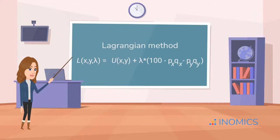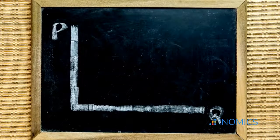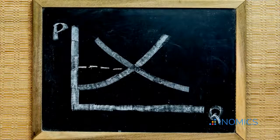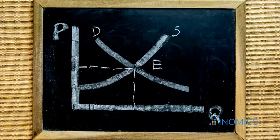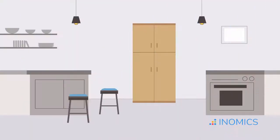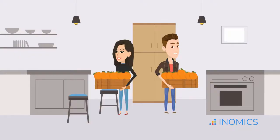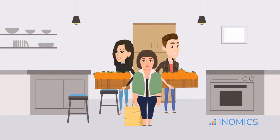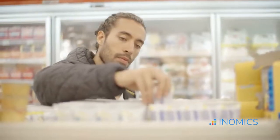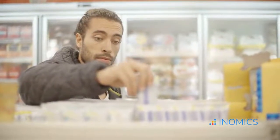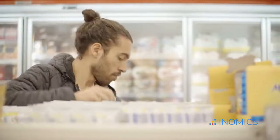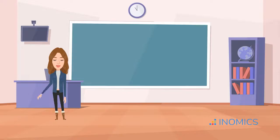So what happens when we scale this up? Say we model Alex's orange consumption using their utility function and budget — we can now ask how many oranges Alex will buy at different prices. That gives us Alex's individual demand curve. Now repeat this for everyone in the market, from Alex to Zara to Jordan, and sum their individual demands. What do you get? The market demand curve for oranges. This is one of the most powerful applications of consumer theory, linking individual utility-maximizing behavior to aggregate market outcomes — it's how microeconomics connects the personal to macro-level trends.